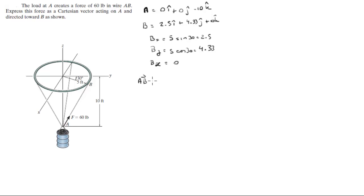So now we find the AB vector, the vector that goes from A to B. And this is equal to Bx minus Ax in the i, plus By minus Ay in the j, plus Bz minus Az in the k. When you plug the numbers in, you get that this is equal to 2.5i plus 4.33j plus 10k.